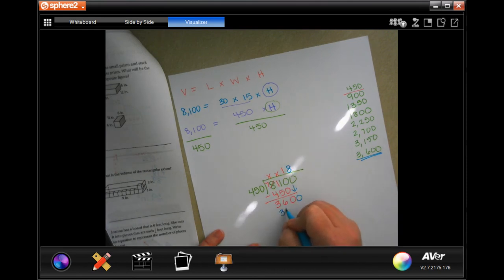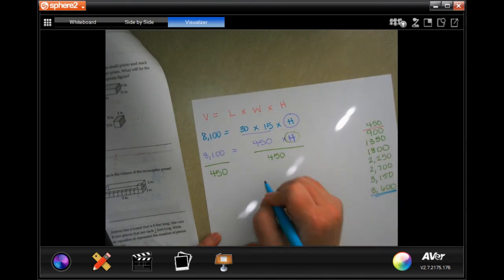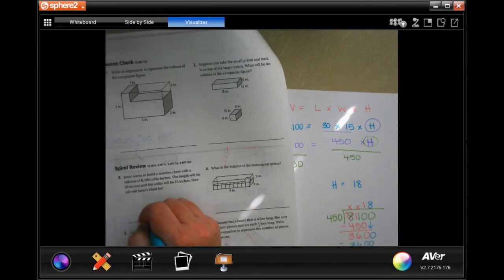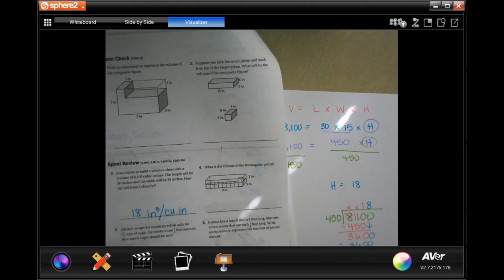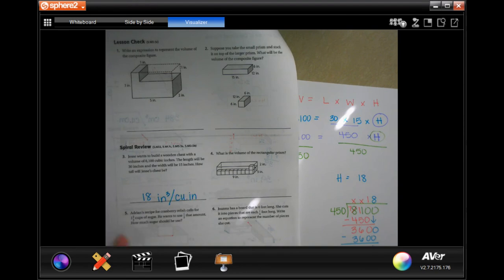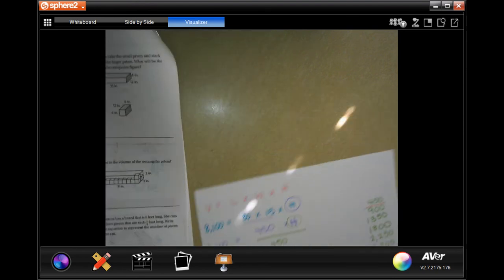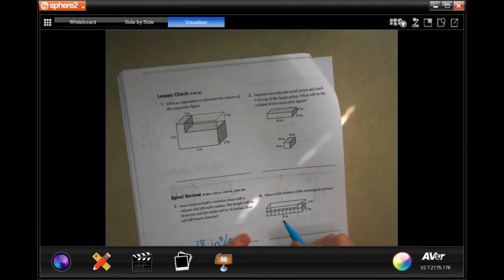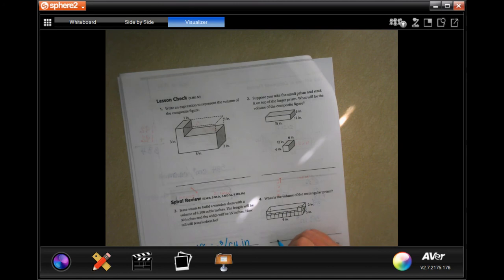That's 3,600. 8 by 450 was 3,600. I have zero left over, so my height then is 18 inches cubed, or you can put cubic inches, whichever you prefer. Next one: What is the volume of the rectangular prism? All we're doing is multiplying length and width and height. 2 times 3 is 6 times 9, 54 inches cubed.